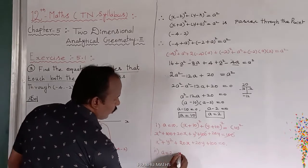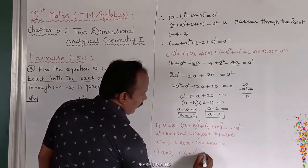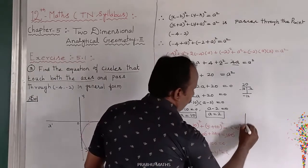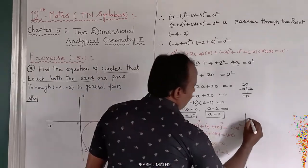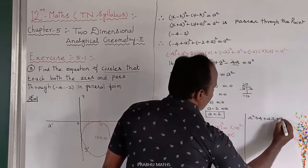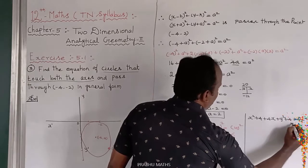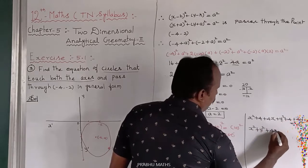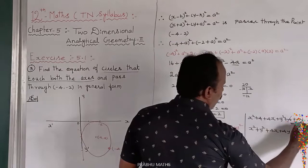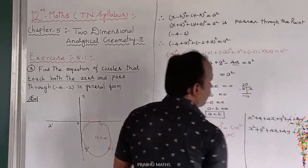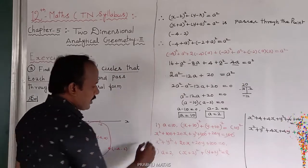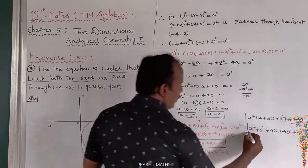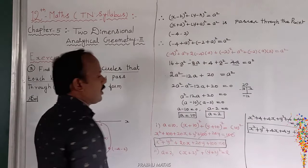For the second answer, a equals 2: x plus 2 whole square plus y plus 2 whole square equals 4. Expanding: x squared plus 4 plus 4x plus y squared plus 4 plus 4y equals 4, which simplifies to x squared plus y squared plus 4x plus 4y plus 4 equals 0. That is the second equation of the circle.